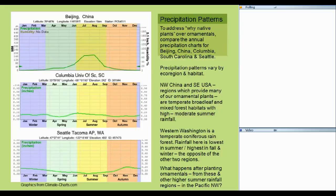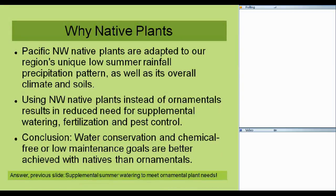What does this mean if you plant ornamentals in the Pacific Northwest environment? Supplemental summer watering is needed to meet ornamental plant needs, because these plants are not adapted to our Pacific Northwest low summer rainfall pattern. That is one of the primary reasons Pacific Northwest native plants are really great. They're adapted not only to the precipitation pattern but climate in general and our soils which tend to be low fertility, glacial till, outwash sands and gravel. So using natives reduces the need for watering, fertilization, and pest control, and meets those goals of LID for water conservation and reducing chemicals in maintenance.